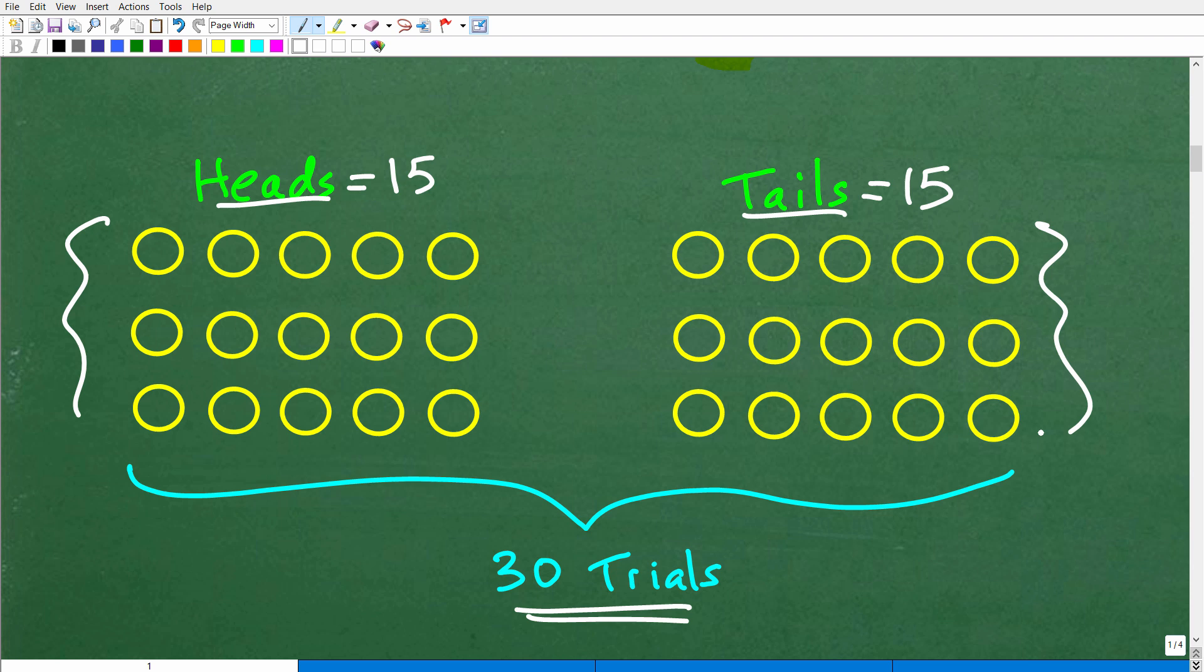Here we have 15 results that are heads, and then here are 15 times the results were tails. Is this the way real life works? No. It does not work this way. So some of you might be saying to yourself, well, what's the whole point of learning this probability stuff? Well, we're going to get to that right now.